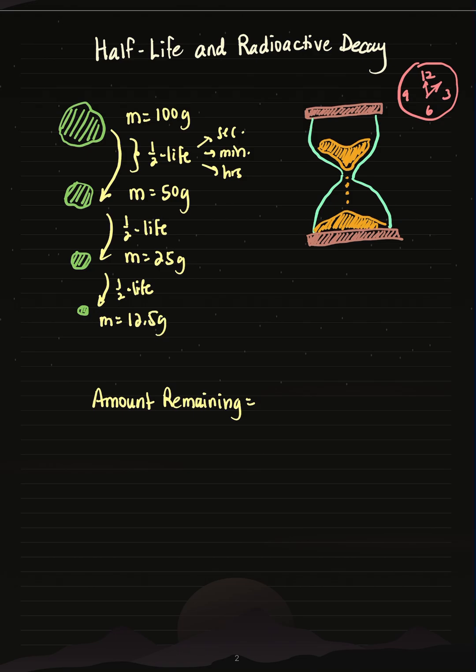So we can use a chart like this, or there's a formula that's actually easier. The amount remaining of a substance equals its initial amount times one-half to the power of n. So n represents the number of half-lives you have, or that have elapsed.